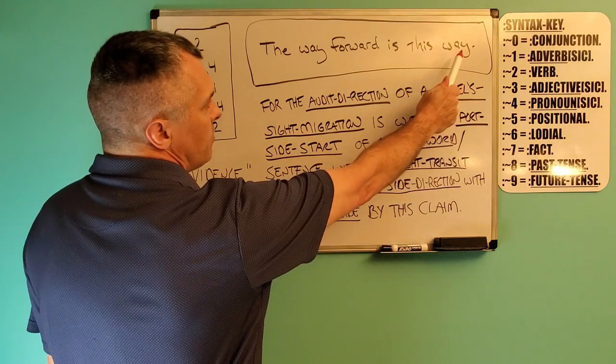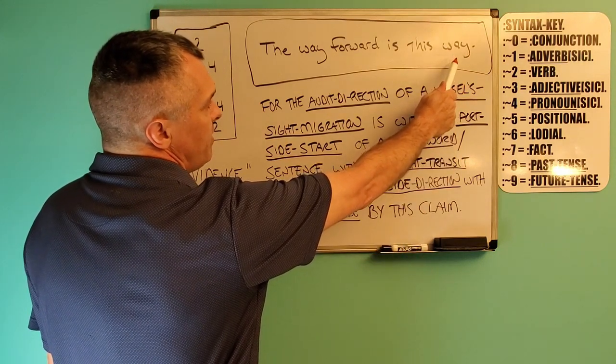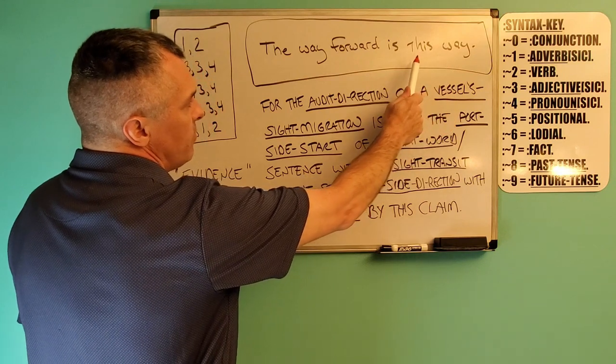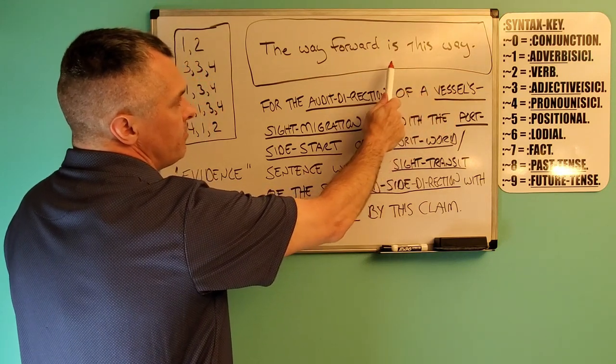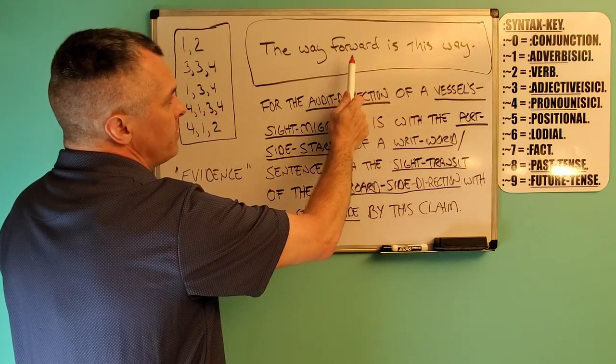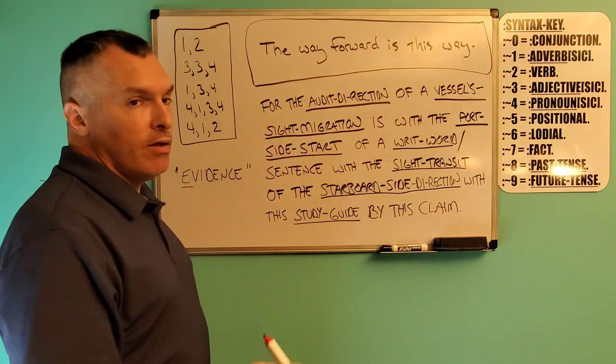we would syntax way, which would be two. This, which would be one. Is, which would be four. Forward is three, way is three. The is one.